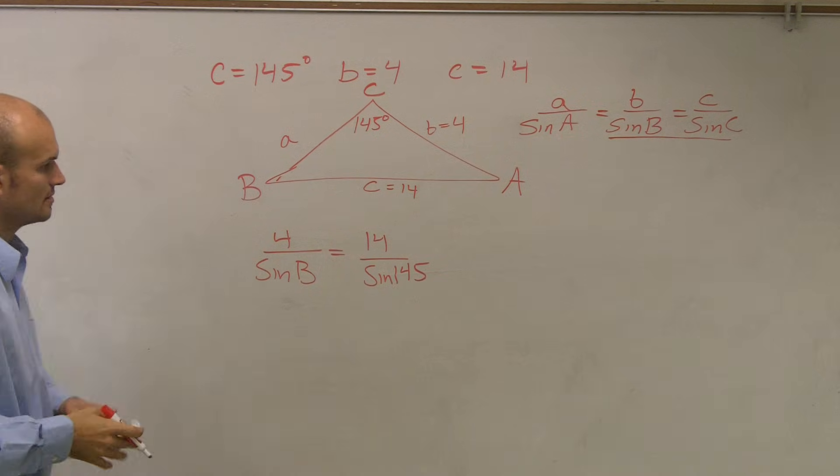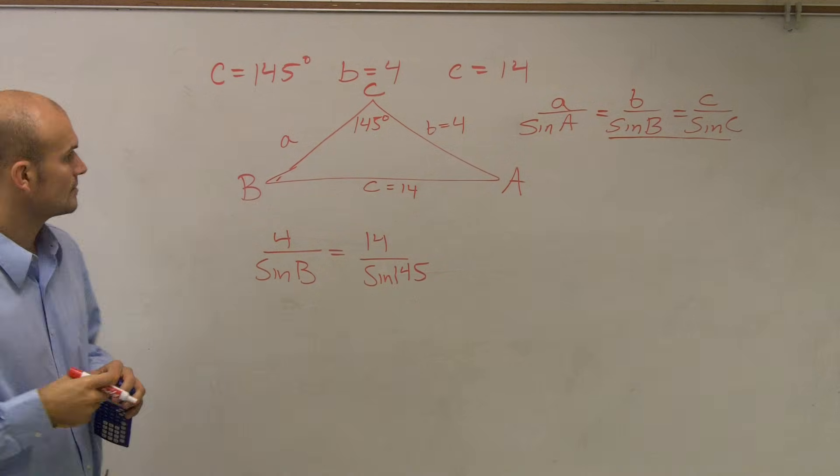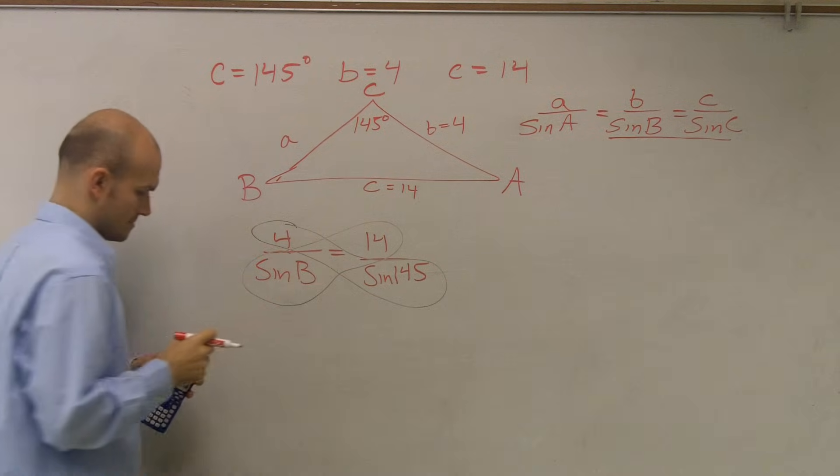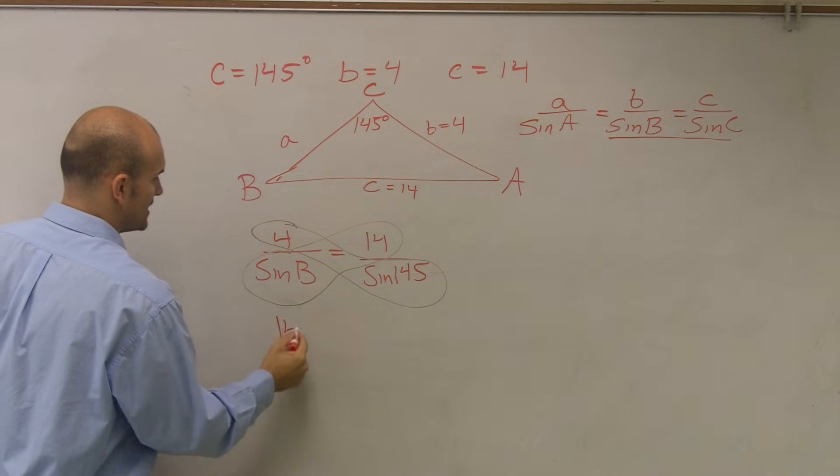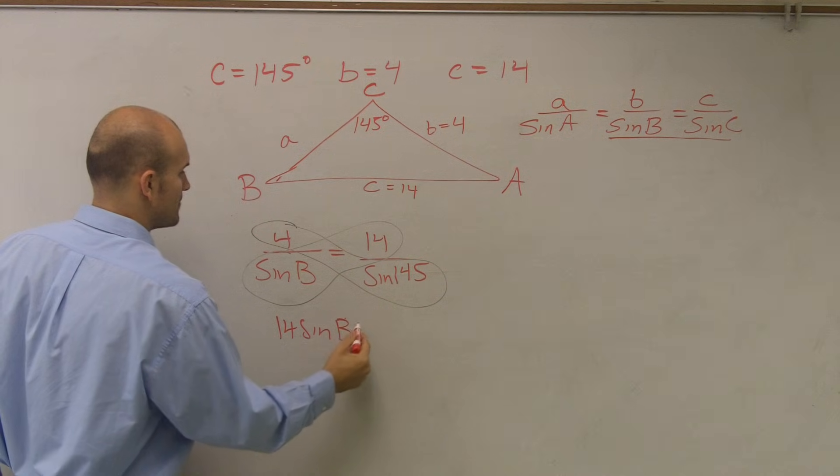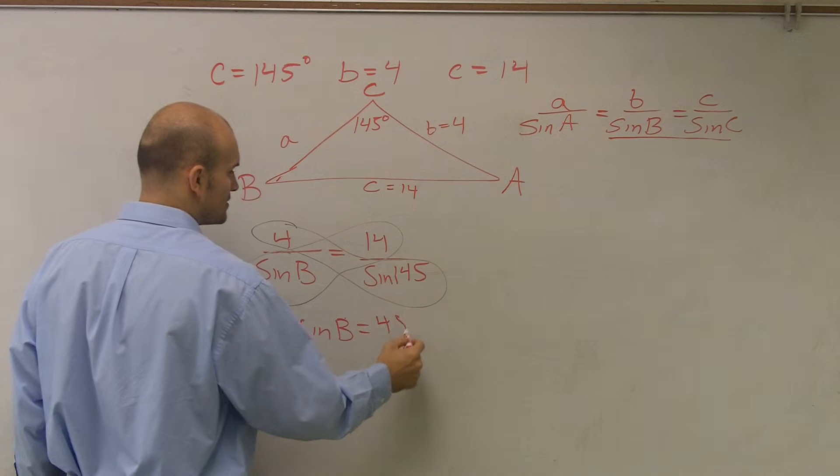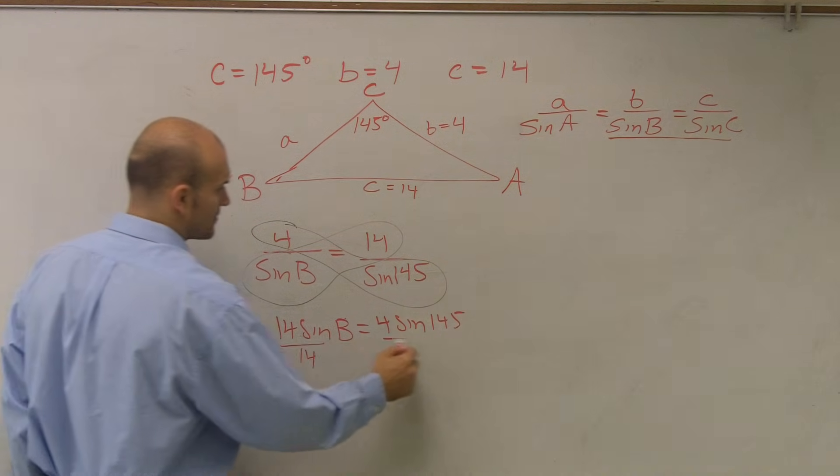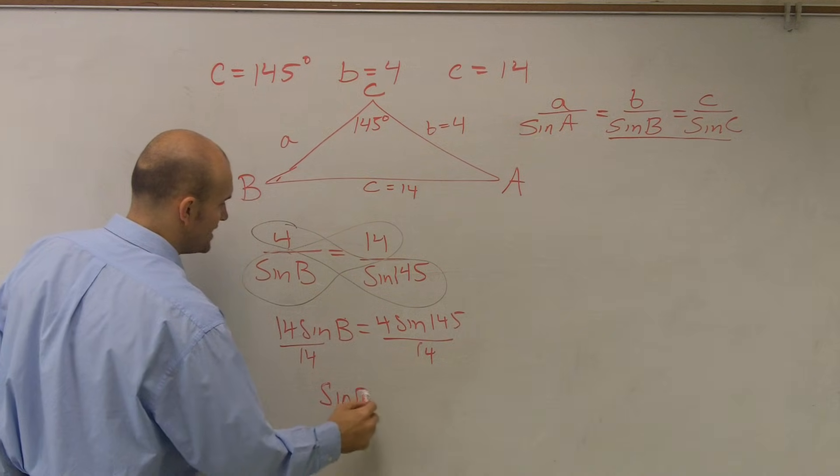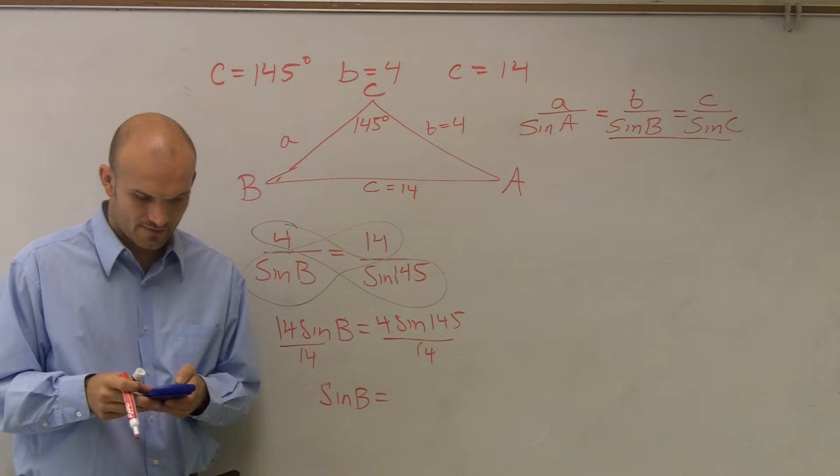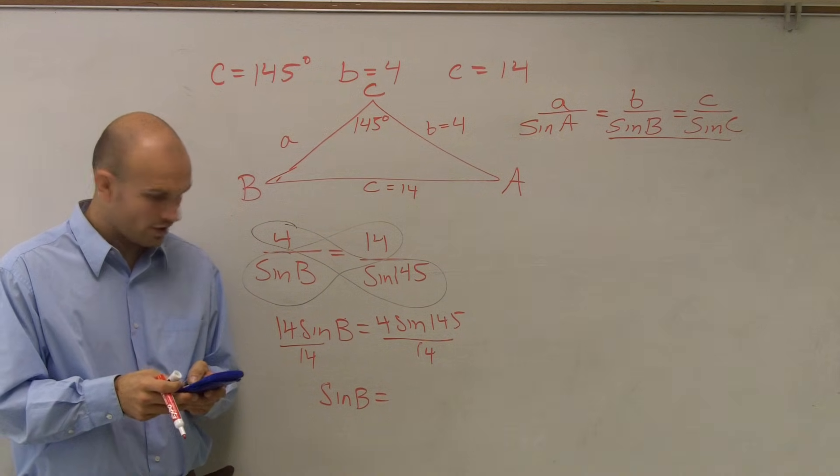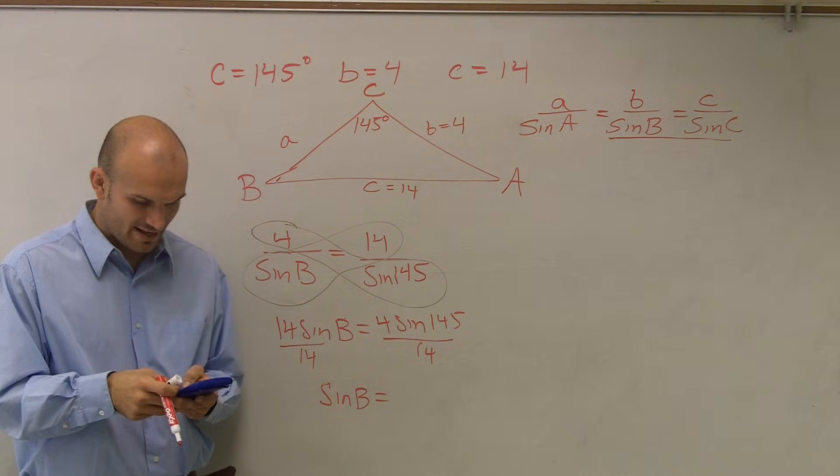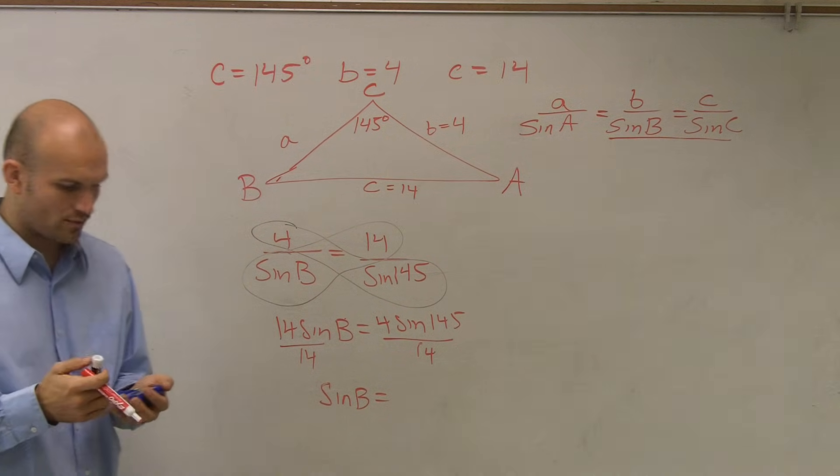So now, at this point, we need to find sine of B. So what I'm going to do is I'm going to cross multiply. So therefore, I end up with 14 sine of B equals 4 times sine of 145. And before I figure all that out, I'll divide by 14. So I have sine of B equals, let's figure this out here. So I have 4 times sine of 145, end parenthesis, divide that by 14, equals 0.1638.